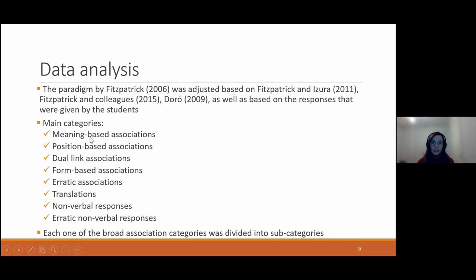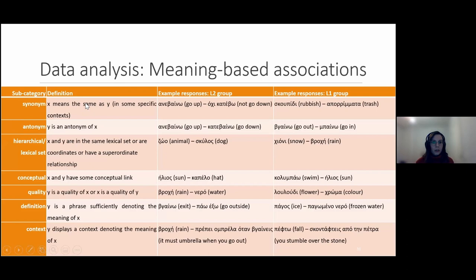We came up with the following main categories: meaning-based associations, position-based associations, dual-link associations, form-based associations, and erratic associations. We also coded three additional response types that don't denote a type of association: translations, nonverbal responses, and erratic nonverbal responses. Each association category included several subcategories.